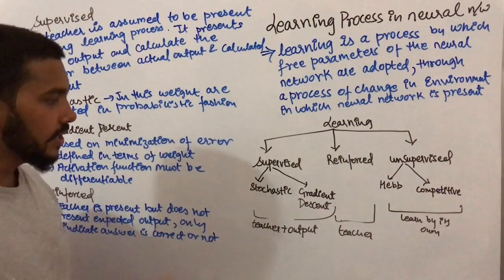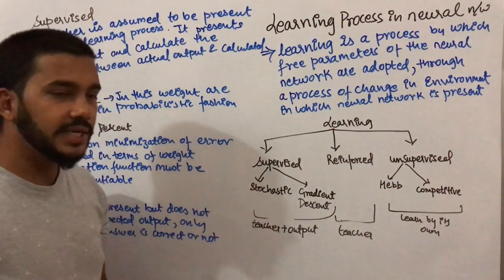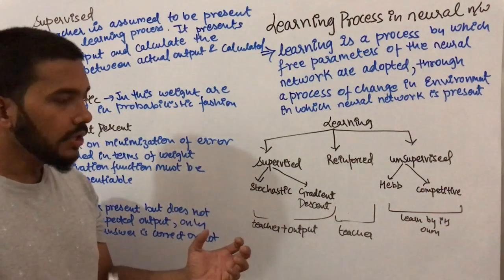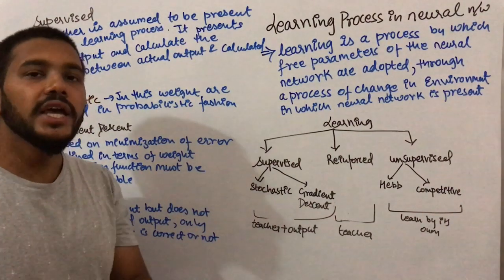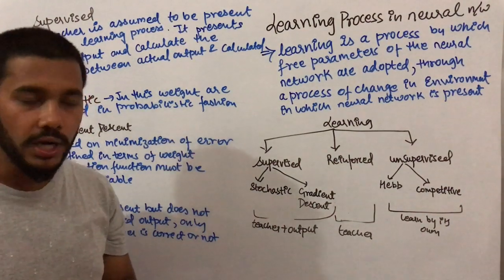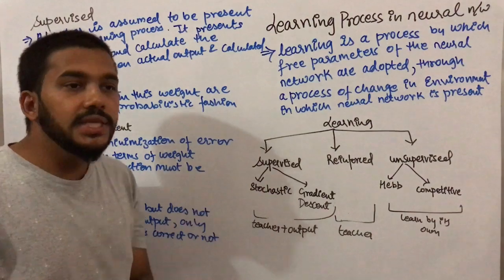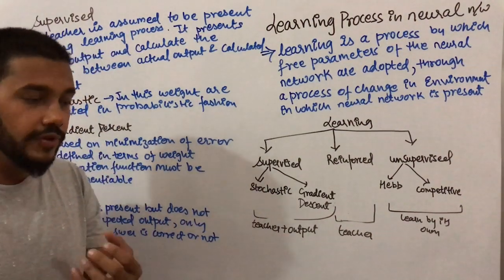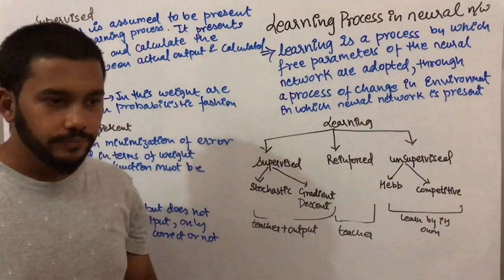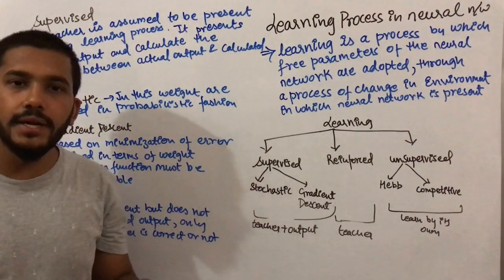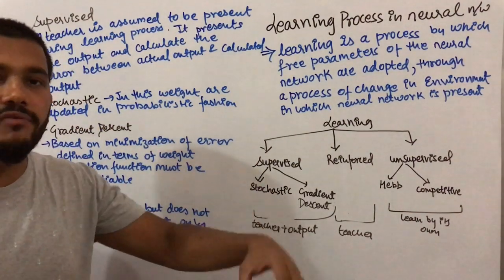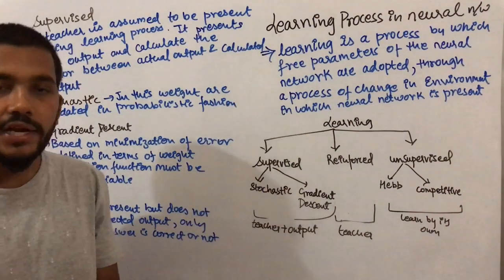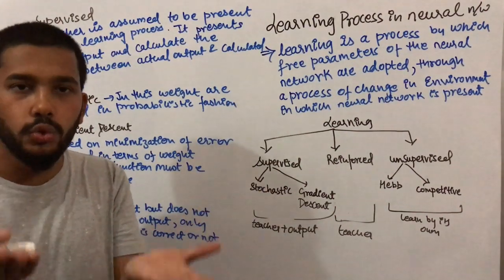Supervised learning is when a teacher is present in the environment — learning in the presence of a teacher. The teacher provides an output, which is the actual output. We calculate our own output, and then compare the two outputs: the actual output and the calculated output.